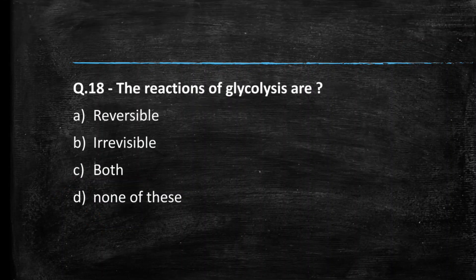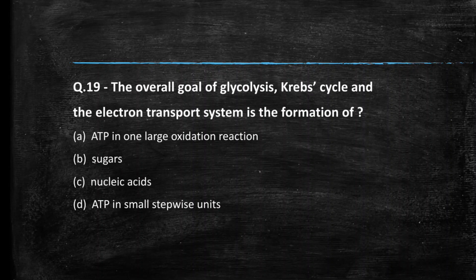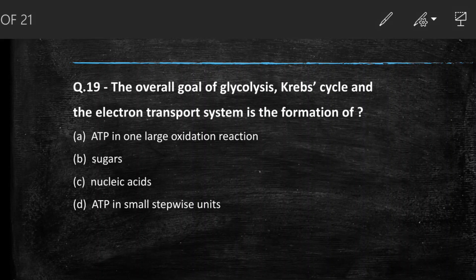Next question: the reactions of glycolysis are — (A) reversible, (B) irreversible, (C) both, (D) none of these. The right answer is both — you can find reversible as well as irreversible reactions in glycolysis. The overall goal of glycolysis, the Krebs cycle, and the electron transport system is the formation of ATP in small stepwise units.